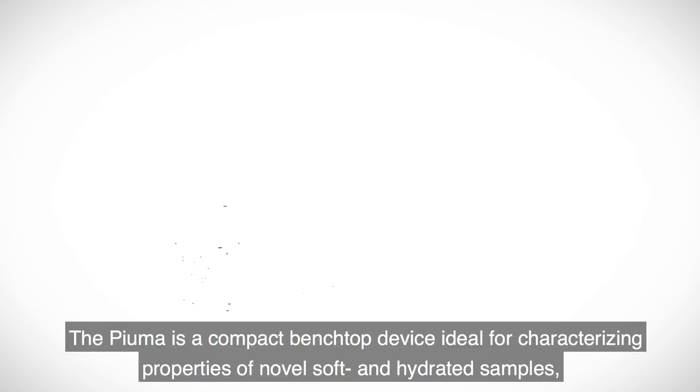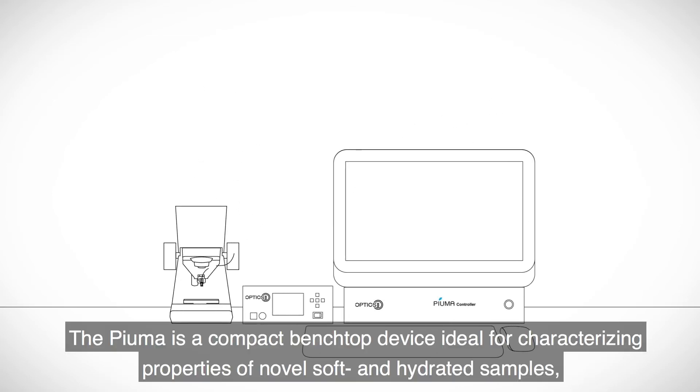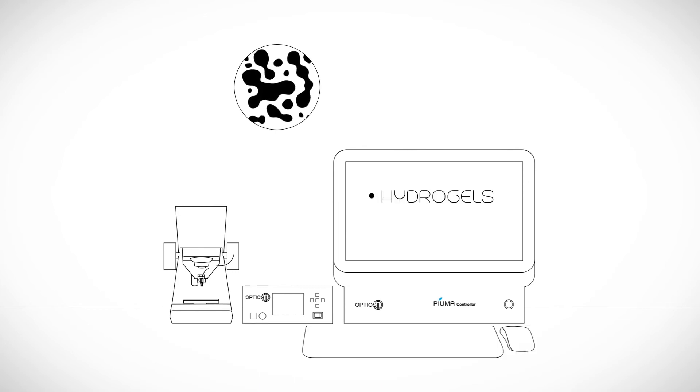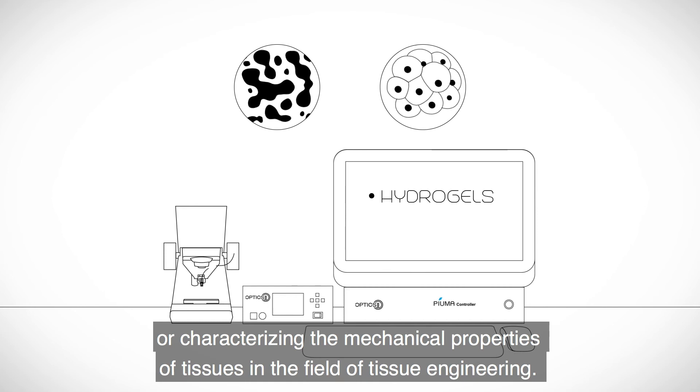The Puma is a compact benchtop device ideal for characterizing properties of novel soft and hydrated samples, such as defining the viscoelastic properties of hydrogels used in life sciences, or characterizing the mechanical properties of tissues in the field of tissue engineering.